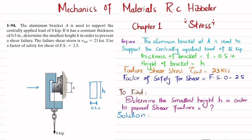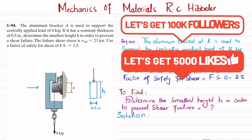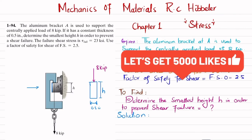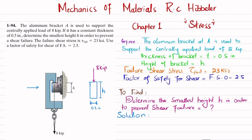Now you can see that this bracket is centrally applied by a vertical axial load of 8 kips, and this 8 kips will cause the shear force in this, so shear stress or shear force will be like this one.